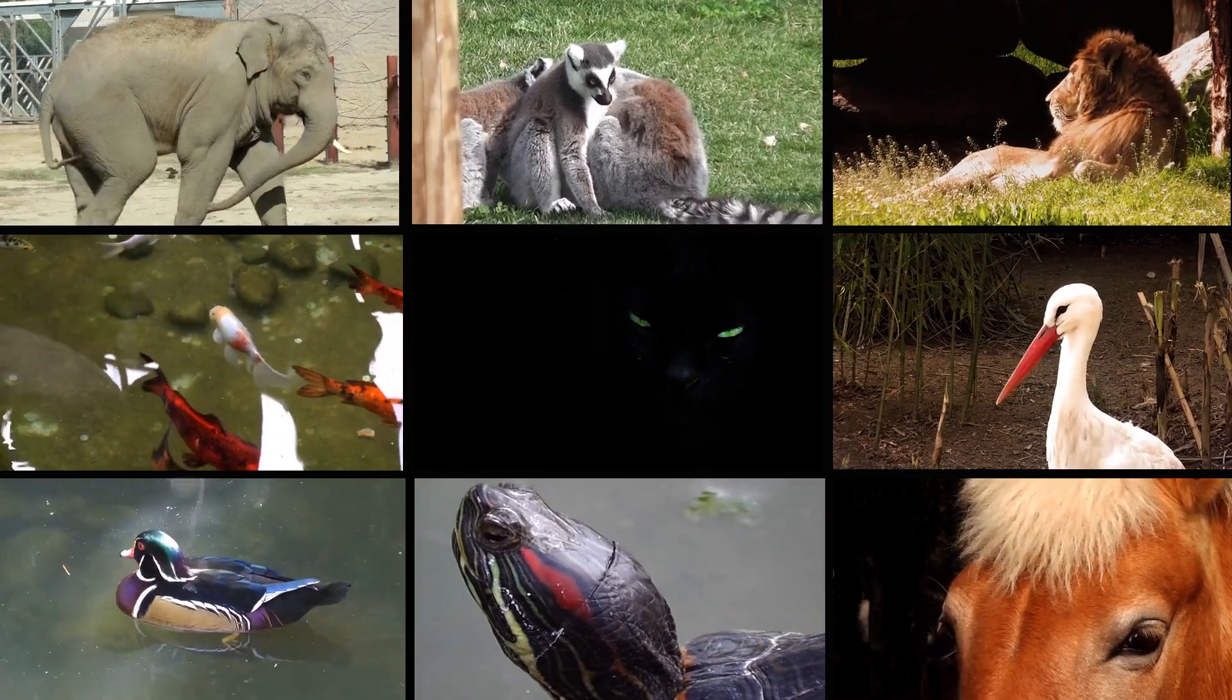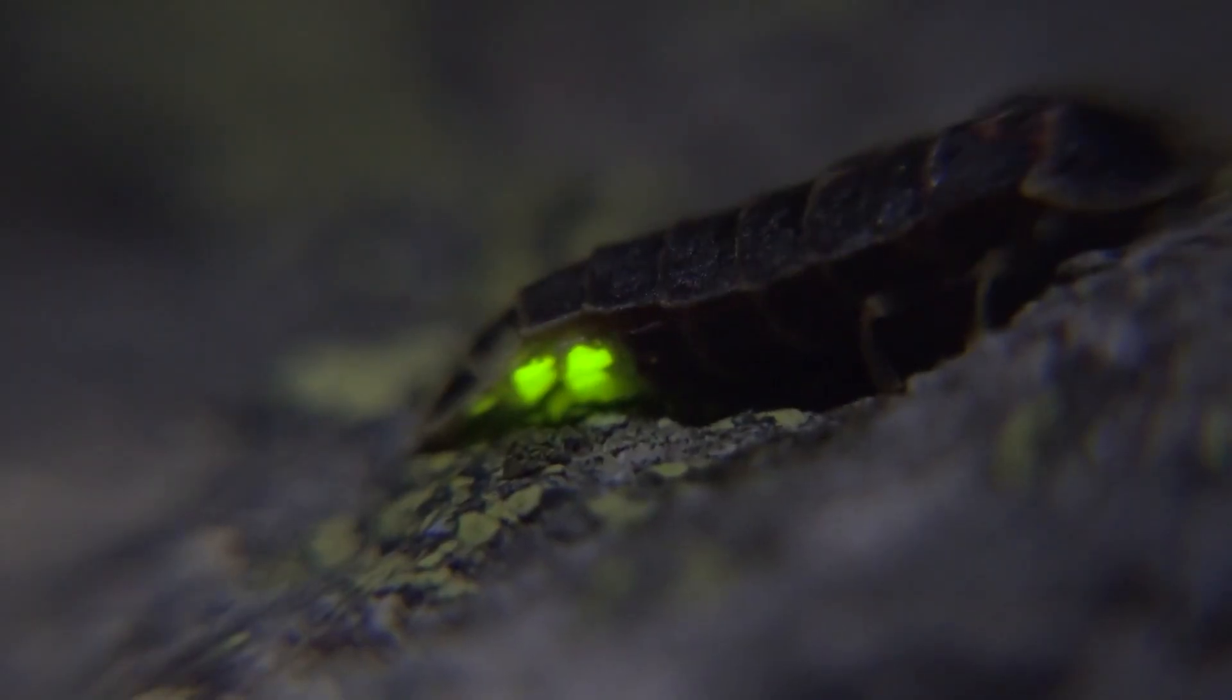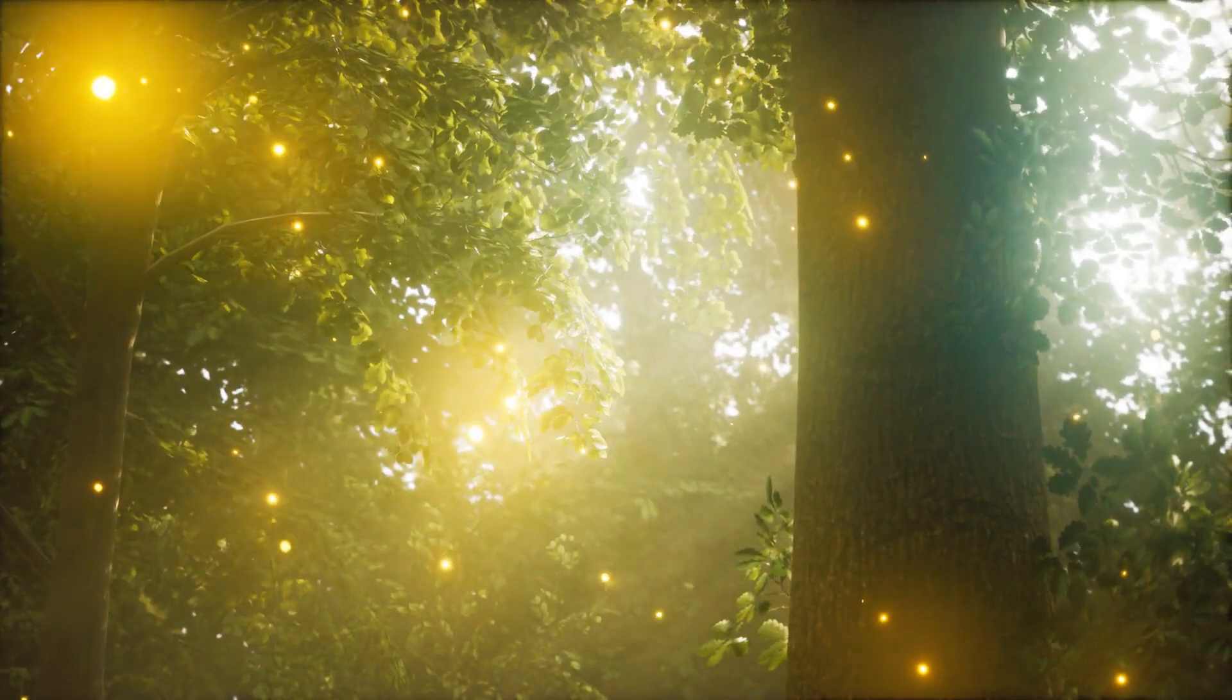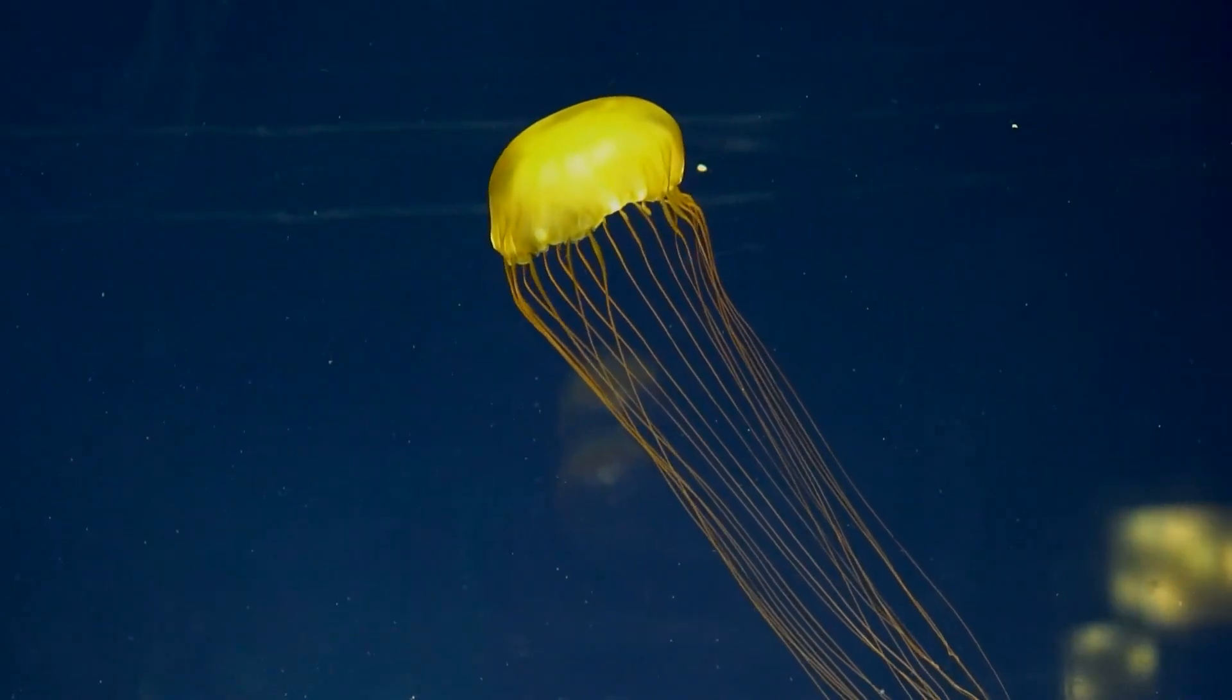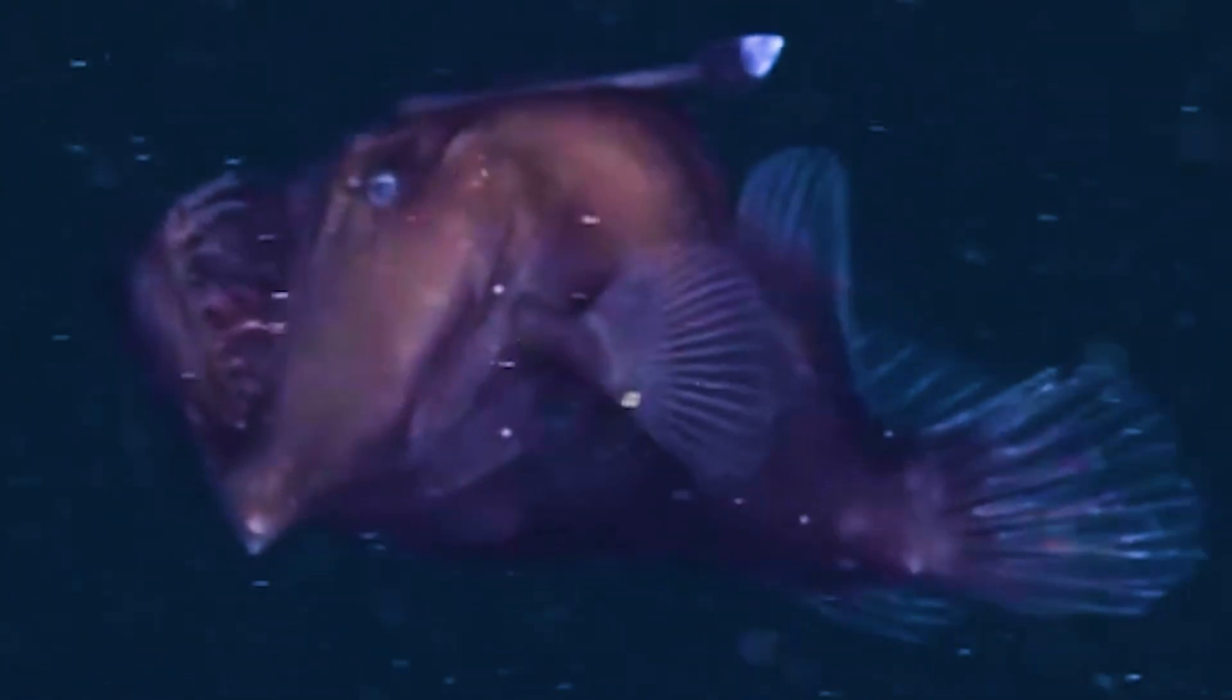Bioluminescence isn't particularly common in animals that live on land, though some well-known examples include glowworms and, of course, fireflies. Under the waves, however, bioluminescence is far more widespread, and it's often seen in deep-sea species, such as in the bacteria that reside in the glowing lure of the anglerfish.